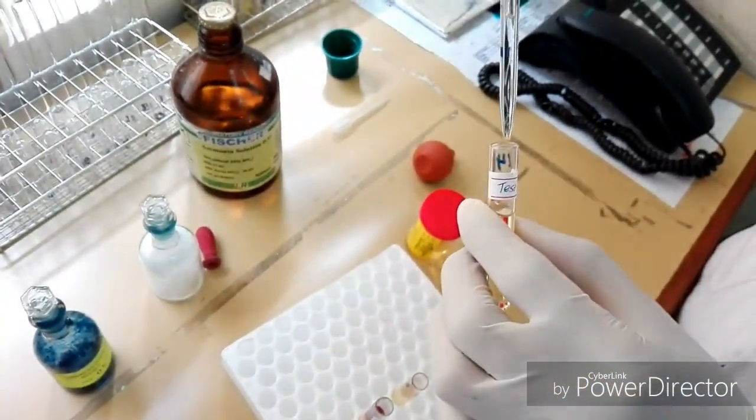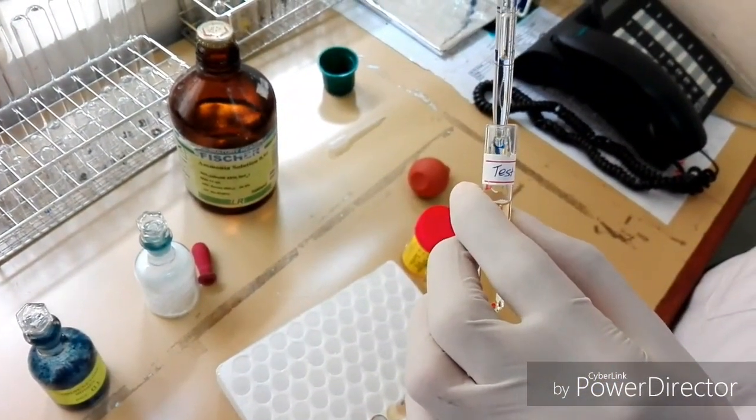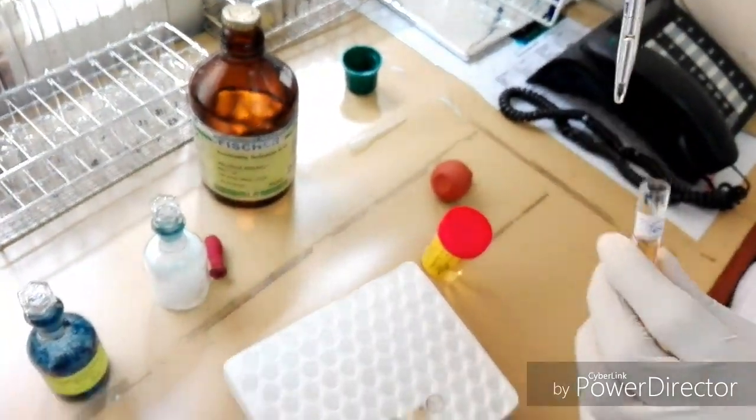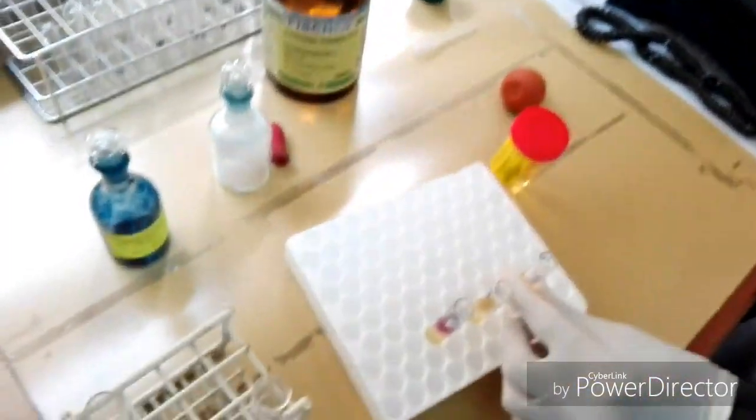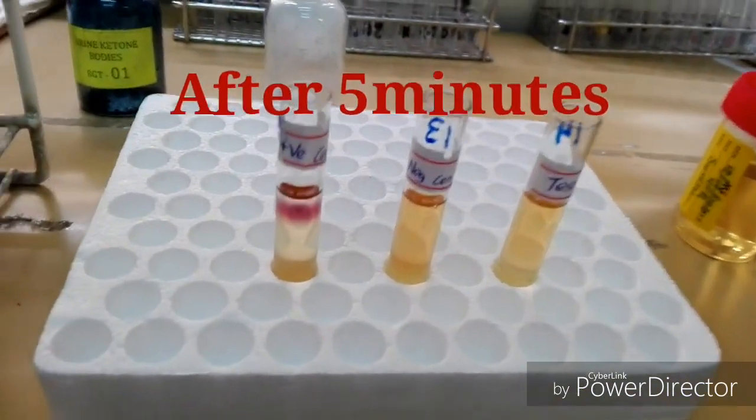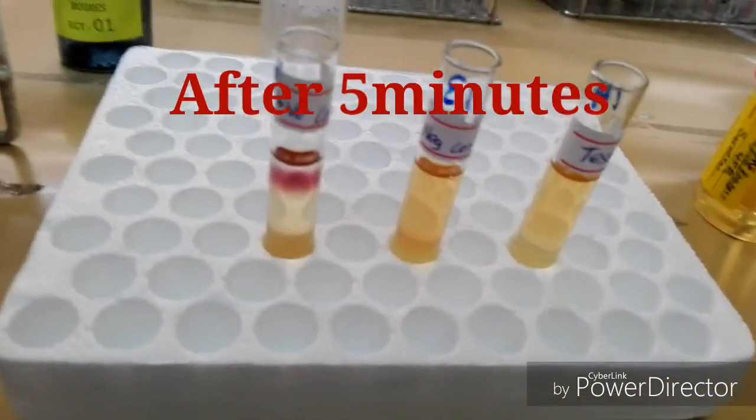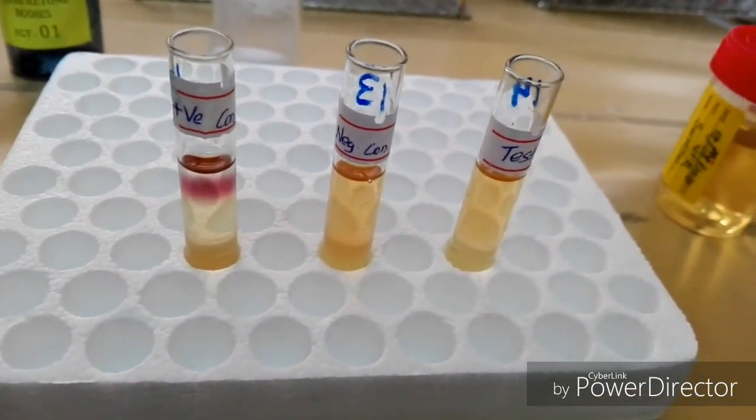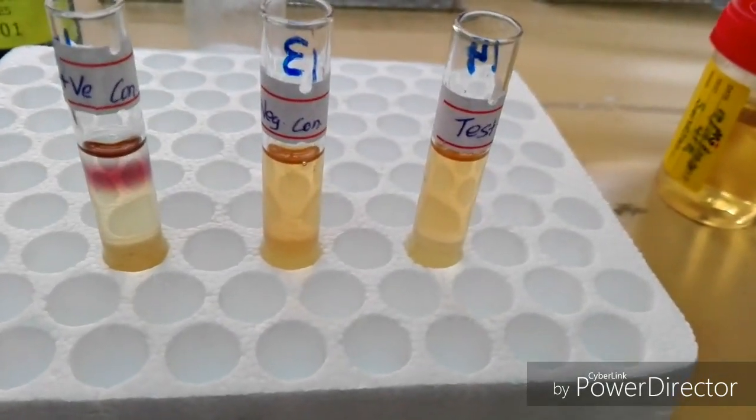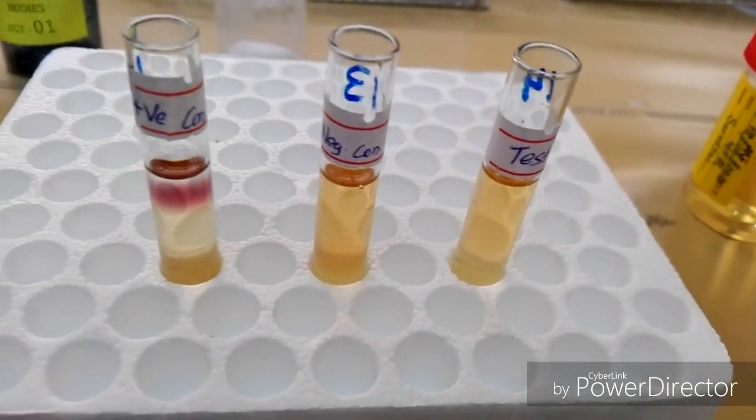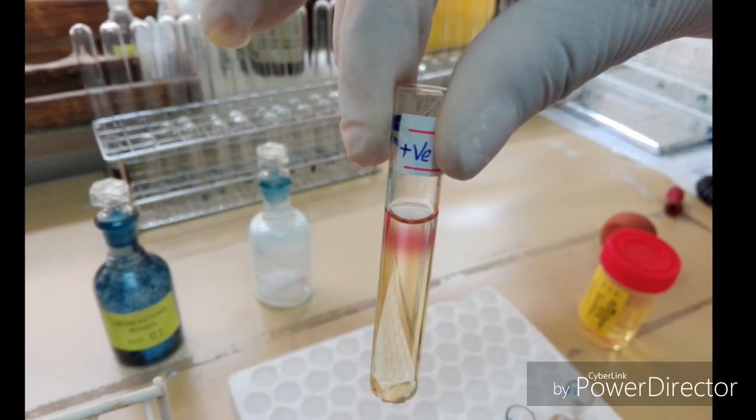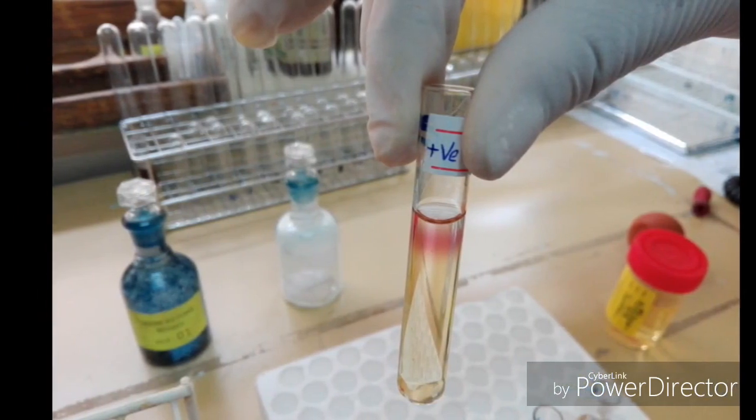As a result, we can observe a permanganate purple color ring just below the ammonia layer. Here, the positive and negative controls are okay. The positive control shows a permanganate purple color ring, and the negative control shows no ring. The test also shows no permanganate purple color ring, so therefore there are no ketone bodies present in the test sample.